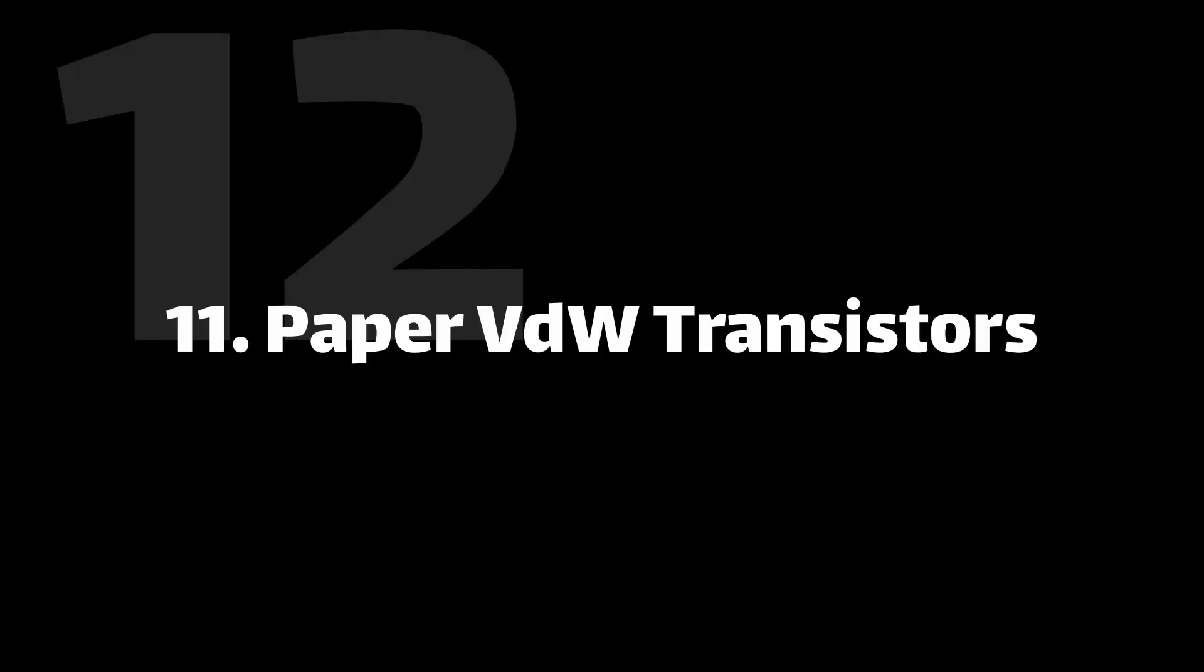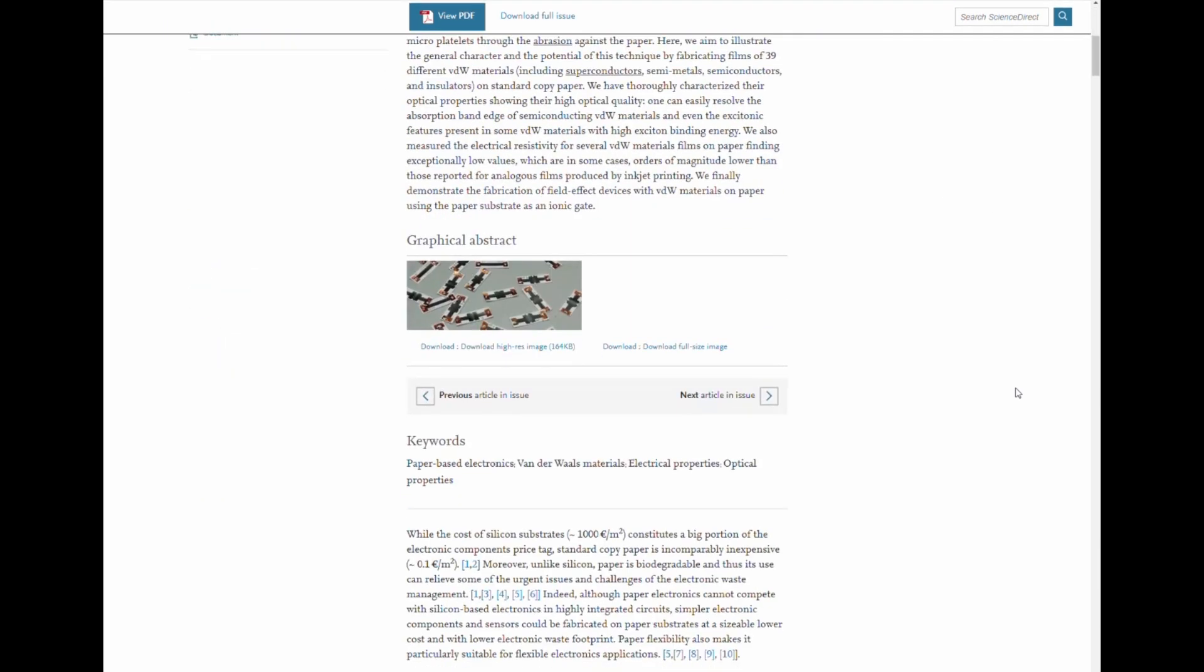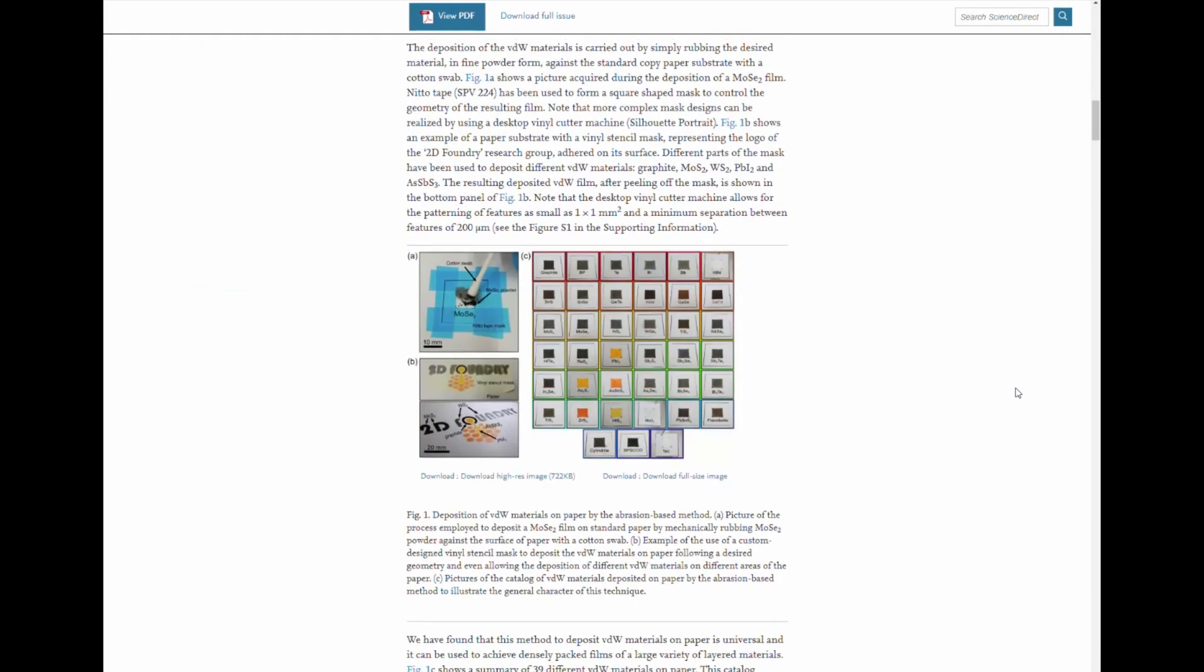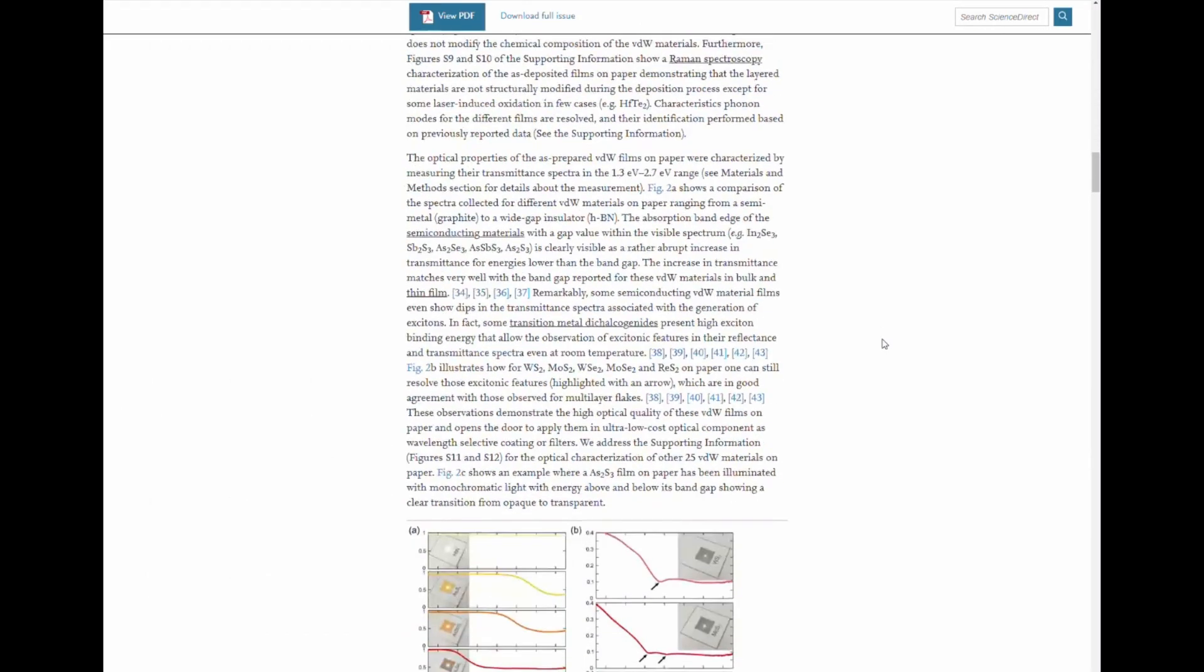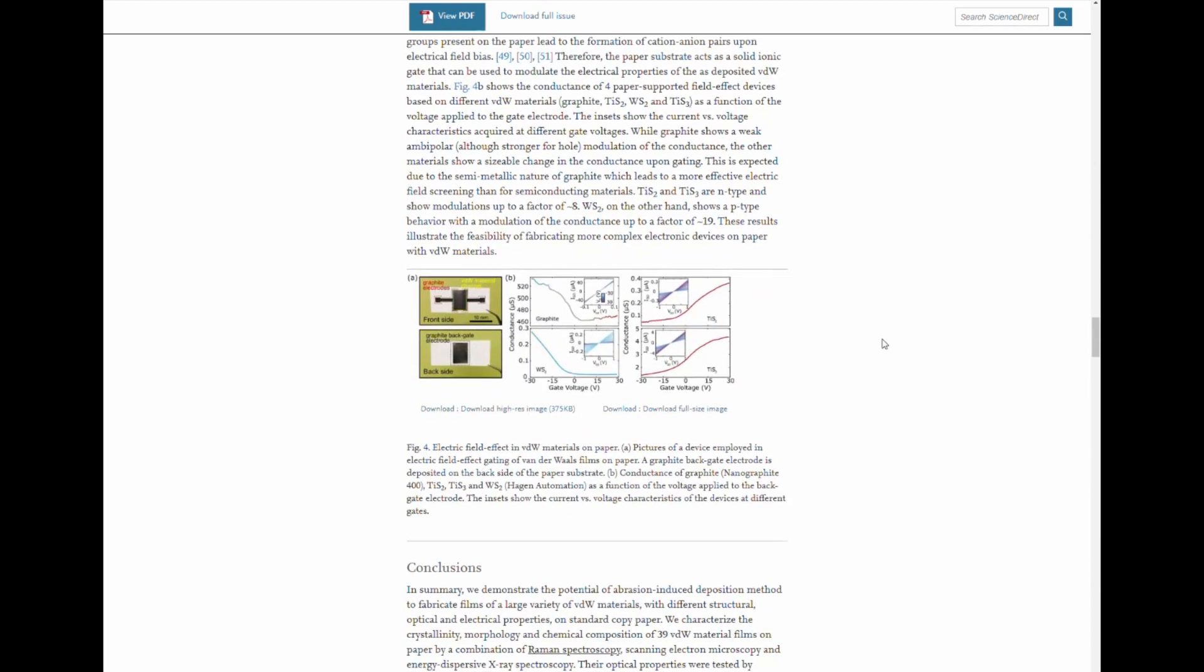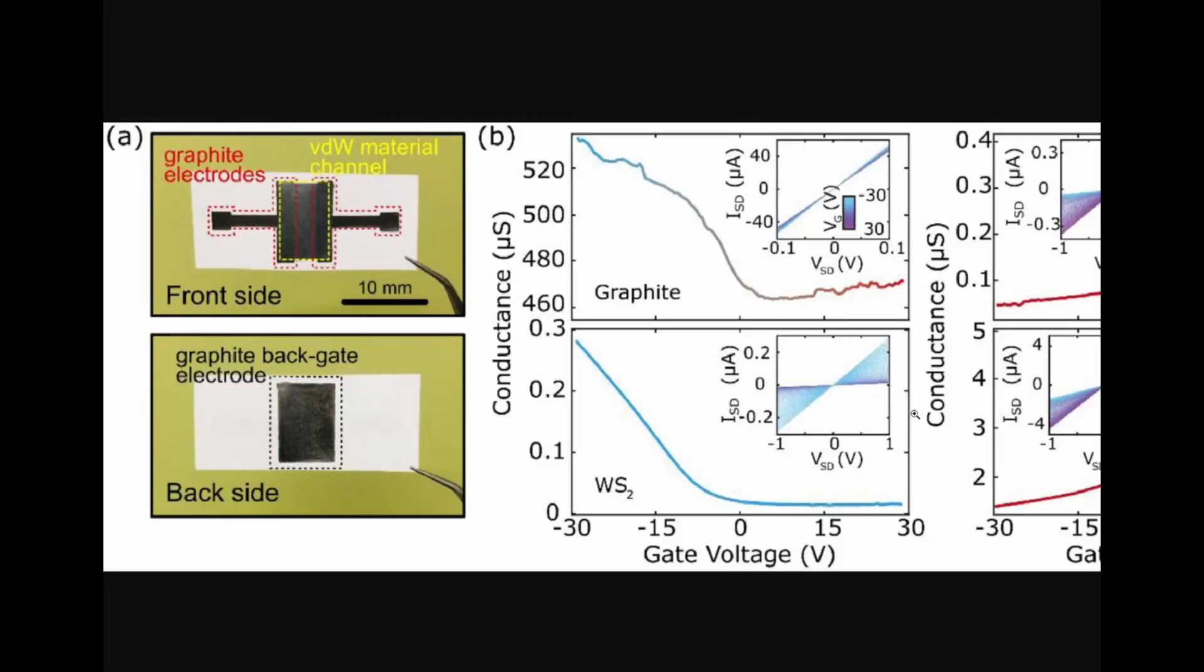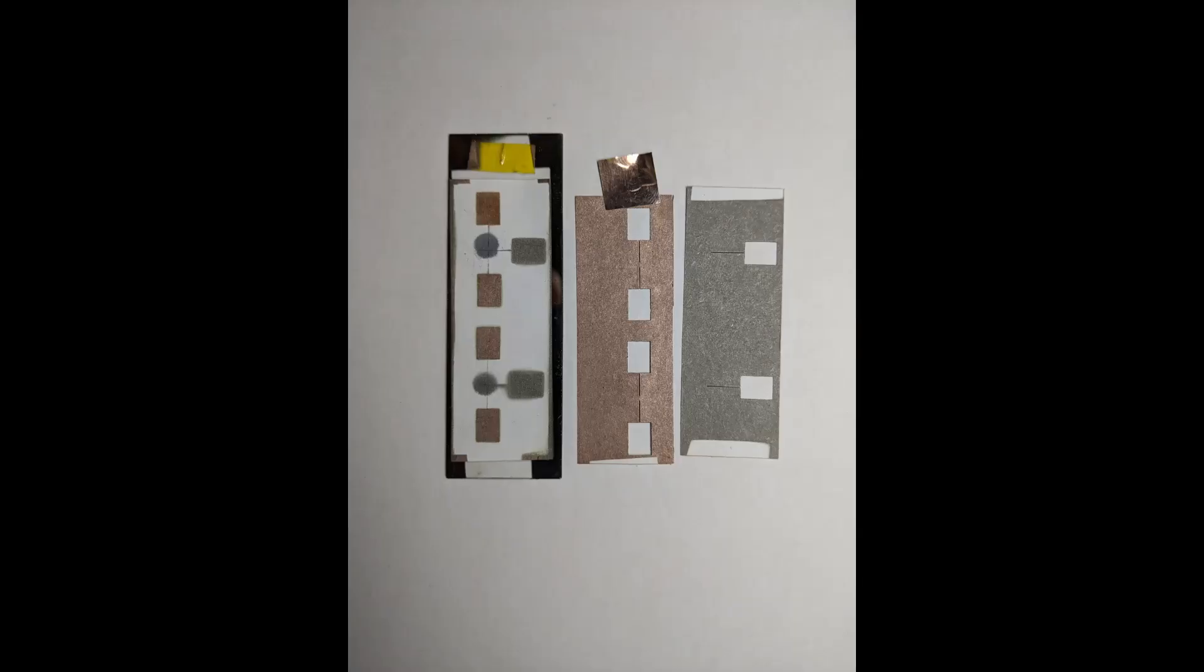I was on a tungsten disulfide kick at the time. I found this cool paper making van der Waals transistors on paper. The idea is that you can lay out contacts using graphite or I sputtered on metals onto a piece of paper, and then abrade tungsten disulfide or molybdenum disulfide - any of these van der Waals materials - and use that as the semiconductor for your transistor. I never actually got this to work but I didn't try very hard. The paper's pretty straightforward, so if anyone's interested I'd highly recommend you go read it and give it a shot yourself. Seems like it should be pretty straightforward.